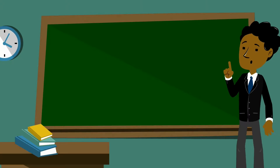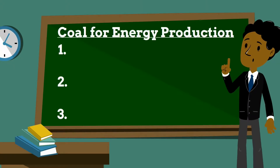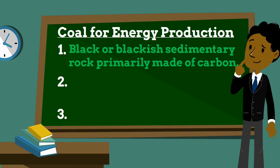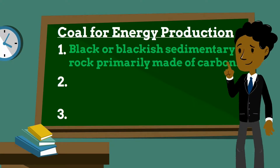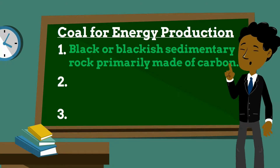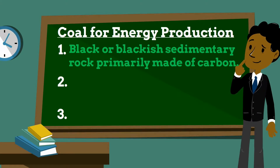Today we'll focus on coal and how it's used to produce energy. Coal is a combustible black or brownish-black sedimentary rock, usually occurring in rock strata and layers or veins called coal beds or coal seams. Coal is composed primarily of carbon along with variable quantities of other elements, chiefly hydrogen, sulfur, oxygen, and nitrogen. Coal is a fossil fuel that forms when dead plant matter is converted into several different types of matter by many biological and geological processes that take place over time.